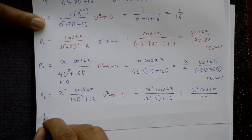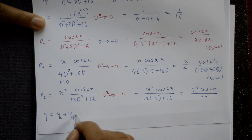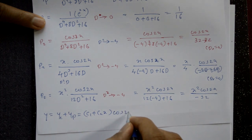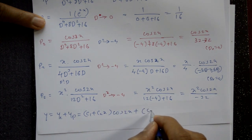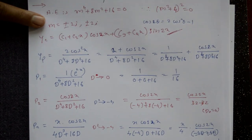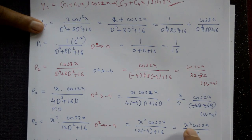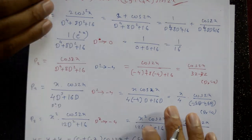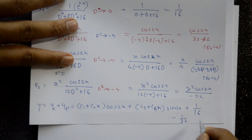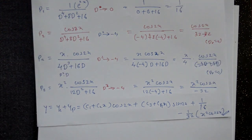The complete solution is y = yc + yp. yc = (C1 + C2·x)cos2x + (C3 + C4·x)sin2x. yp = P1 + P2 = 1/16 - (x²cos2x)/32. This is the required complete solution.